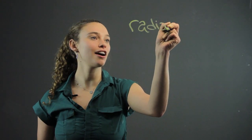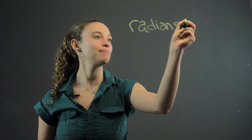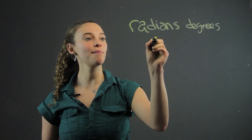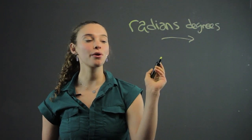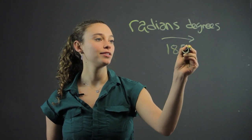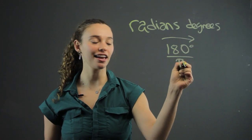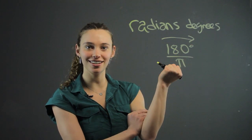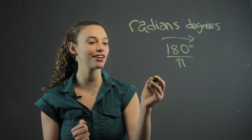Hi, I'm Rachel, and today we're going to be going over turning radians into degrees. Radians and degrees are just different ways of measuring — they're both just units of measurement. So if we're going from radians to degrees, we're going to multiply by 180 degrees over pi to whatever the radian is, and that will cancel out and we'll get degrees. Let's look at an example.